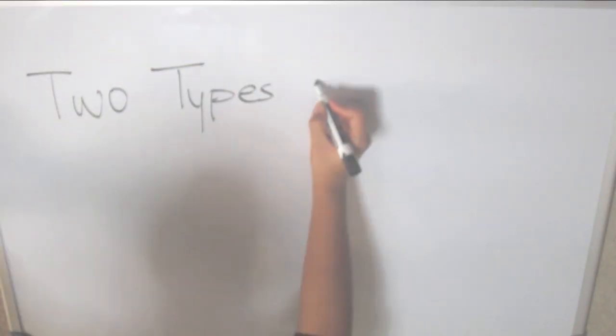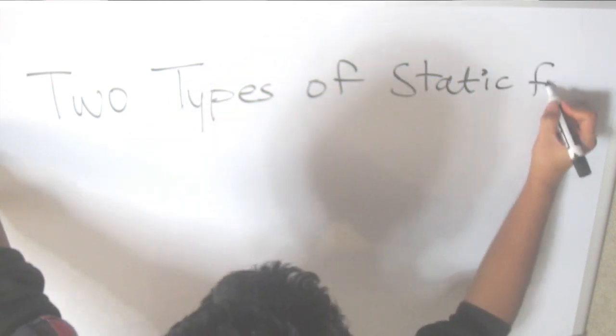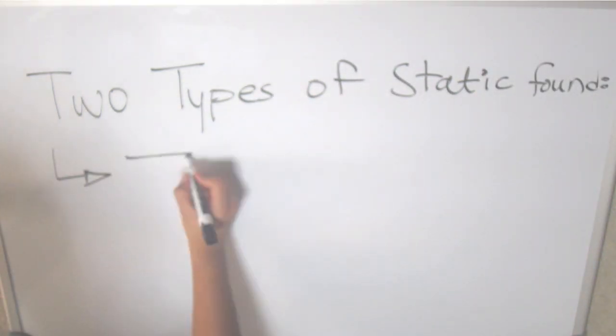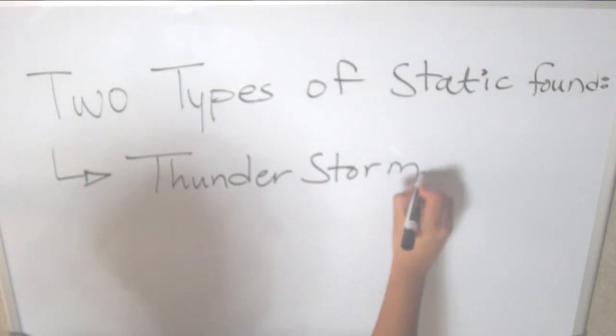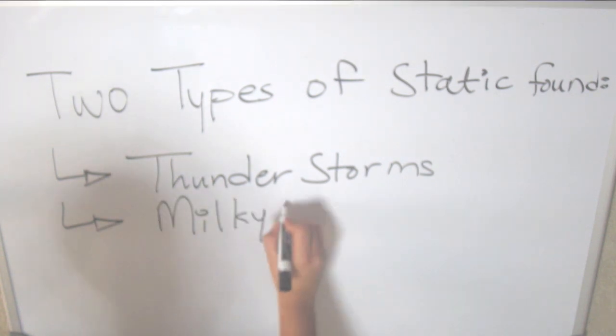So after Jansky did a couple of experiments, he found two sources of static. The first one was from local thunderstorms and the second one was from none other than the Milky Way galaxy.